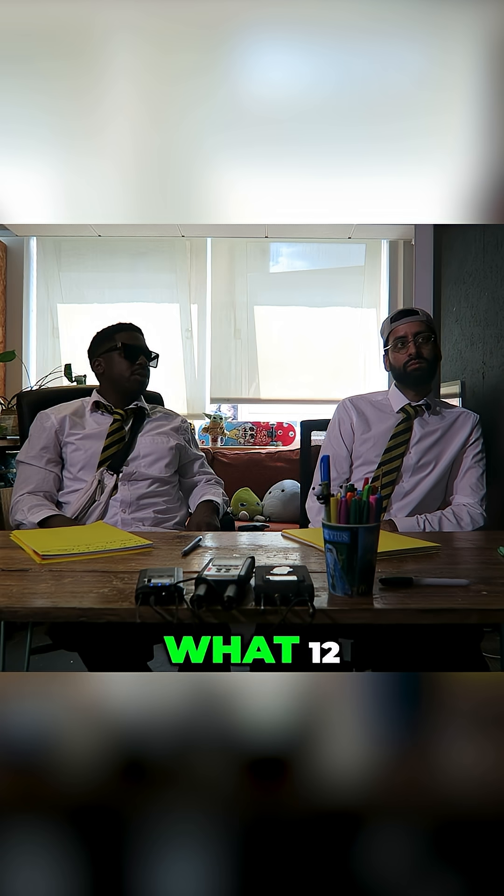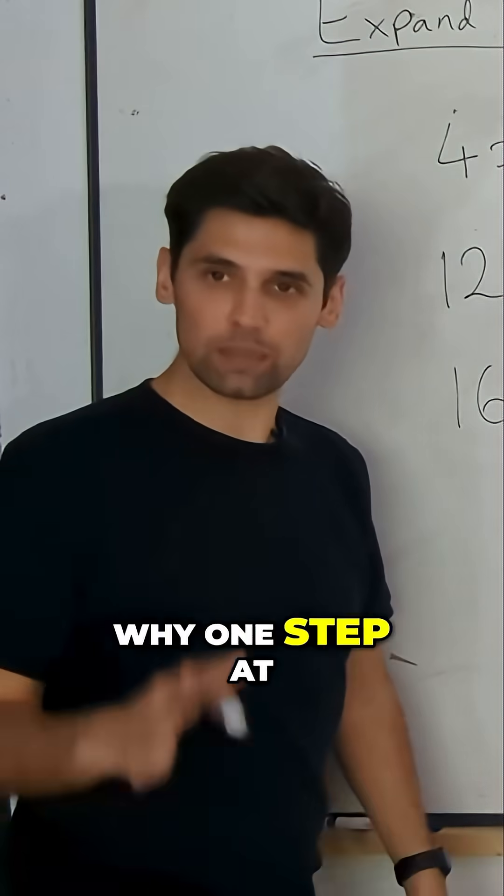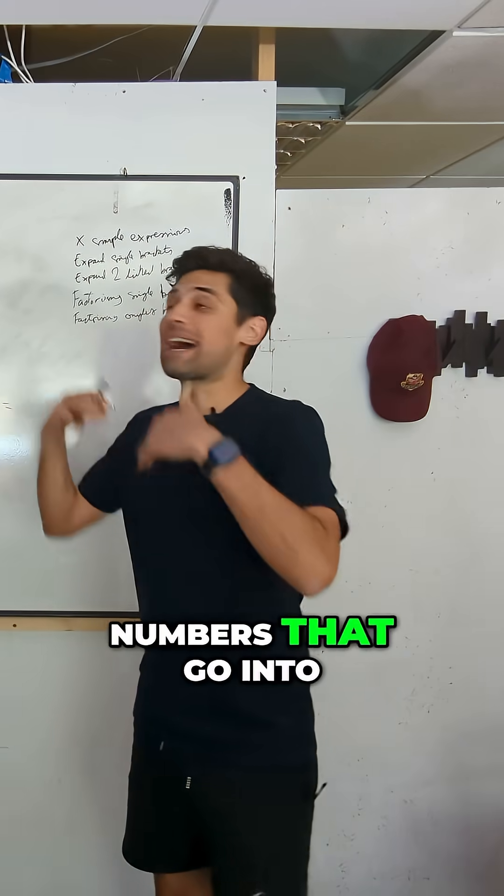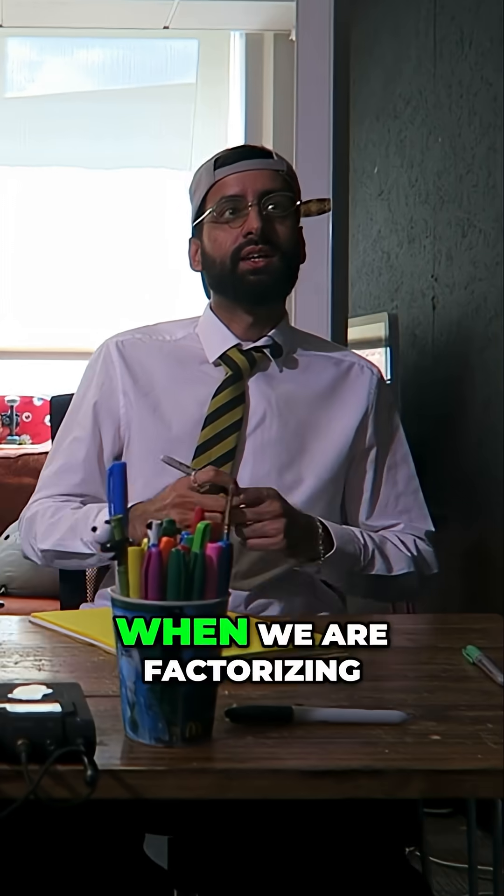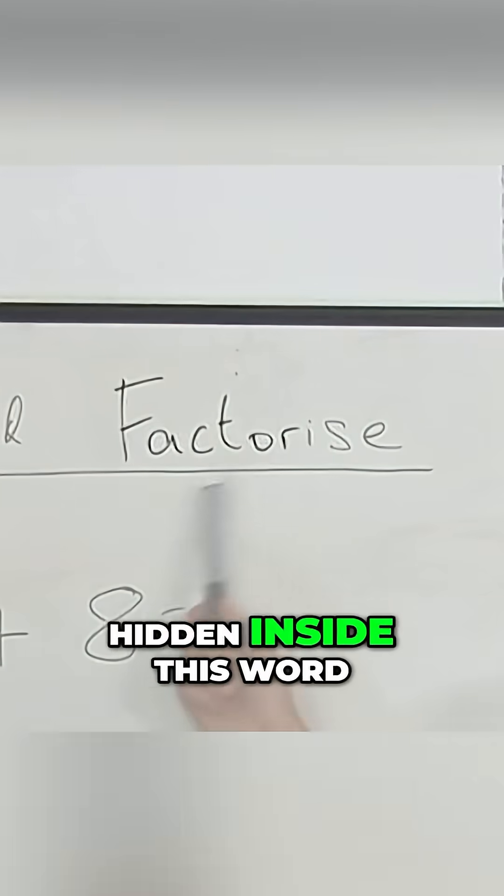So what number goes into both of these? 12, 4. 4 divided by 12... divided by 4 is what? Yeah, three. One step at a time, please. We spoke about factors earlier - numbers that go into other numbers. When we are factorizing, you may notice the word 'factor' is actually hidden inside this word.